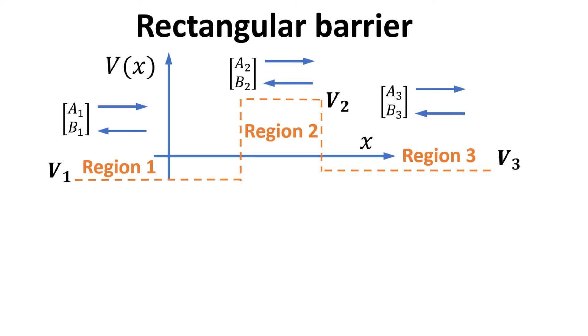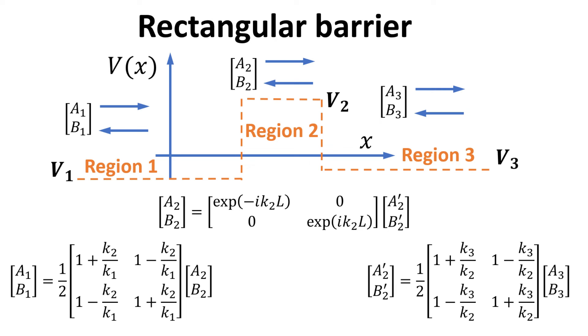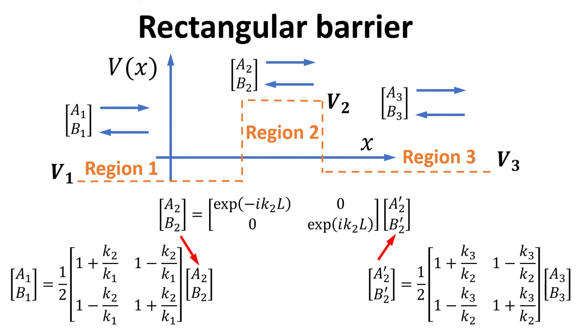Back to the scattering by a rectangular barrier problem. We have three scattering regions, each characterized by a scattering amplitudes vector. As we have shown earlier, the scattering amplitudes vector in adjacent regions are related via a propagation matrix. For example, A1 and B1 are related to A2 and B2 via a step propagation matrix. The A2 and B2 amplitudes before and after propagation through region 2 are related via the free propagation matrix. These scattering amplitudes are written such that we can substitute the amplitudes of the later stage into the previous one, as indicated by the red arrows.